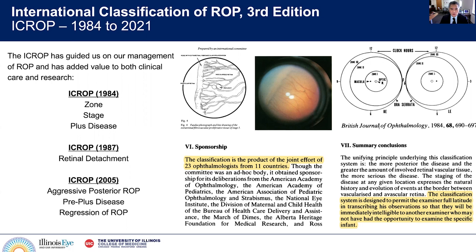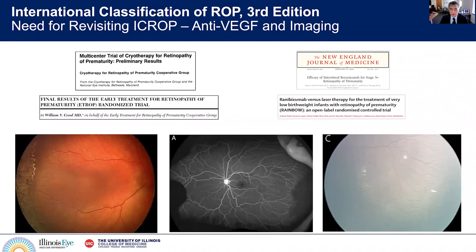Looking back almost 30 years to 1984, the original iCROP brought us zone, stage, and plus disease, followed by retinal detachment classification in 1987. Then in 2005, discussions around aggressive posterior ROP, pre-plus disease, and regression of ROP. Now, 15 years later, this group came together to discuss an updated classification.